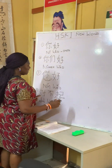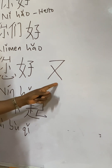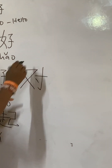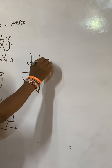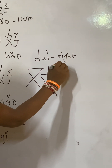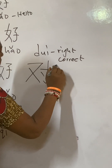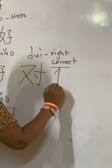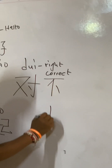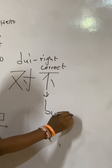Let's write 对 (duì) again. First write 又 (yòu), then add this stroke. 对 (duì) means right or correct. Then 不 (bù) means no or not.